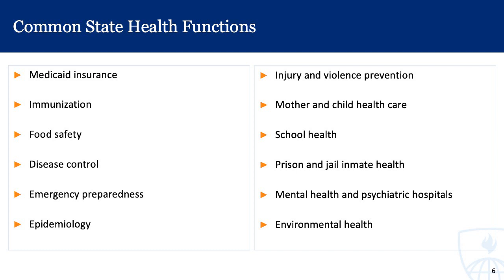Some common state health functions include providing Medicaid insurance — as discussed in the payer segment, it's really up to the states to implement it. Ensuring immunization for the population, including for children at school level as well as follow-up immunizations such as the COVID vaccine. Food safety, which generally also encompasses food accessibility and food policy more broadly. And disease control, which encompasses the management of infectious diseases as well as some non-communicable diseases.